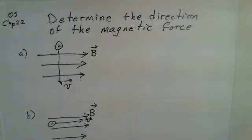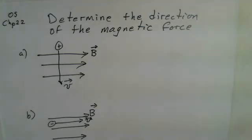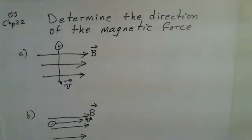Professor Clements here, as we consider the direction of the magnetic force on a moving charged particle. In Example A, the magnetic field is off to the right. We have a positive charge that's moving down on the paper. We want to know the direction of the magnetic force.